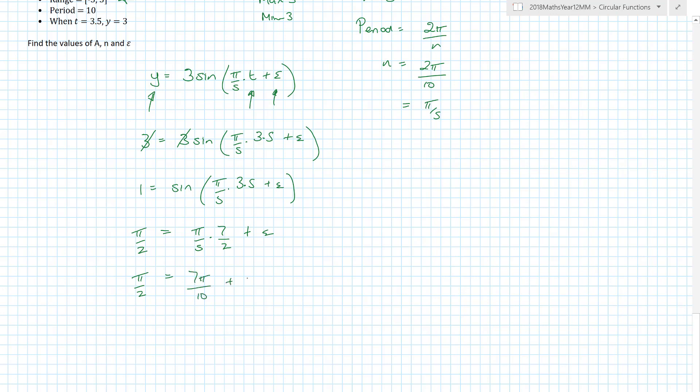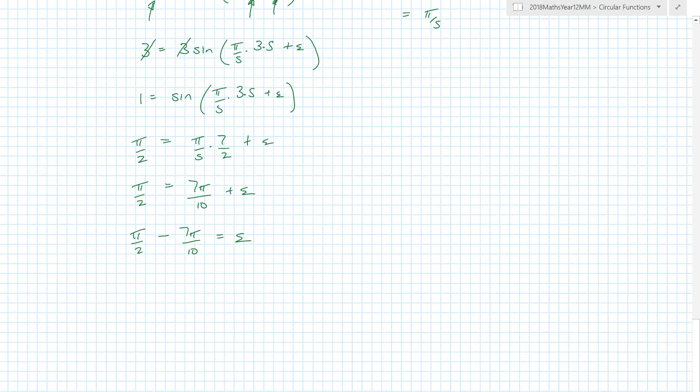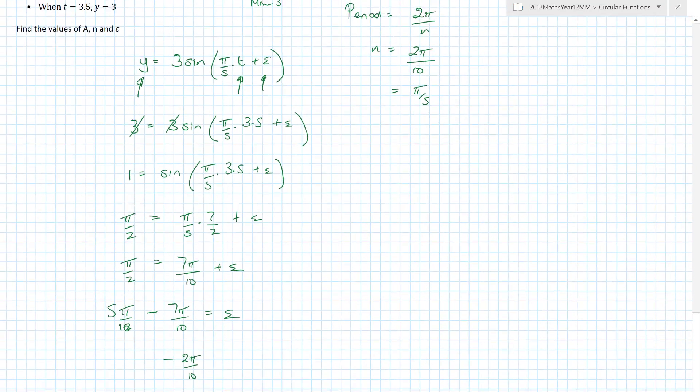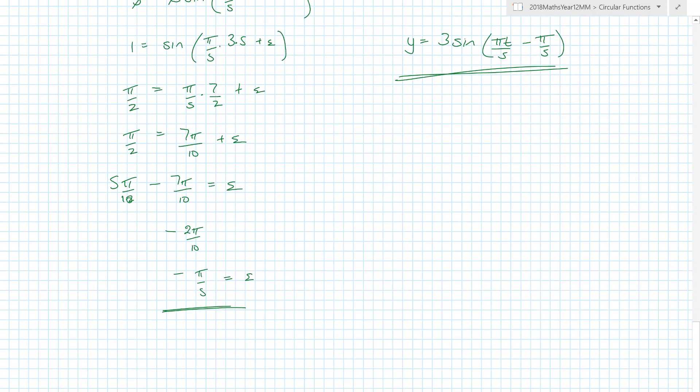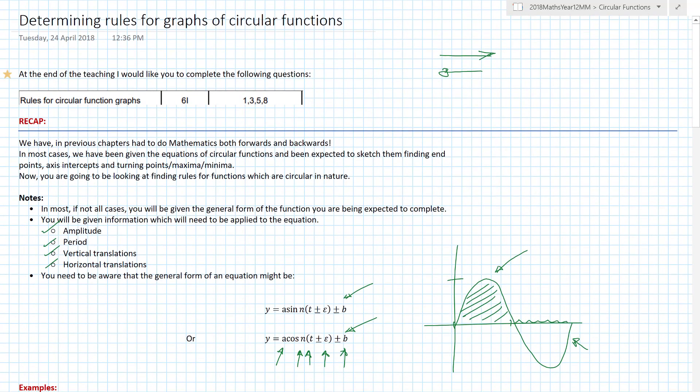So π on 2 is equal to 7π on 10 plus epsilon. So π on 2 minus 7π on 10 gives me epsilon. Change it out so it's 5π on 10, now becomes 5π on 10 minus 2π on 10 which is minus π on 5 is epsilon. And so therefore restating my equation you would have y is equal to 3 sine π on 5 times t minus π on 5.